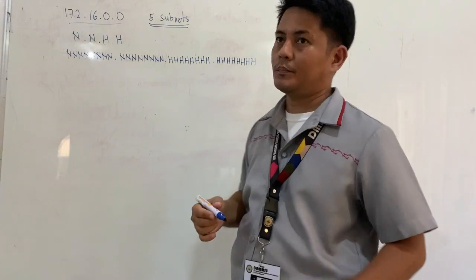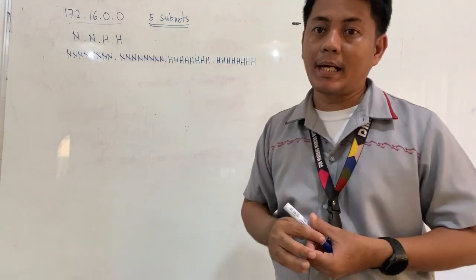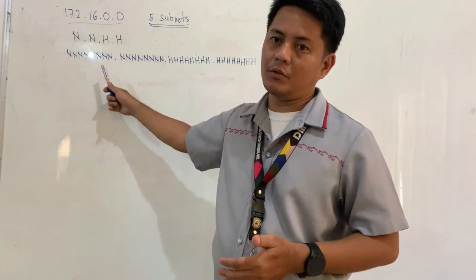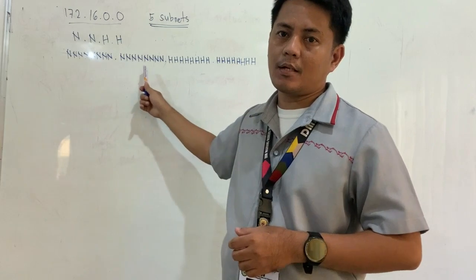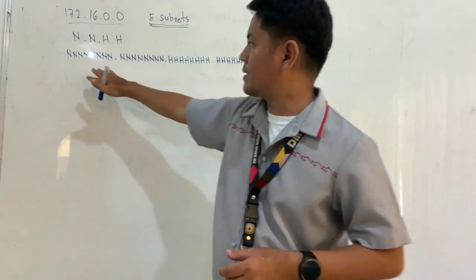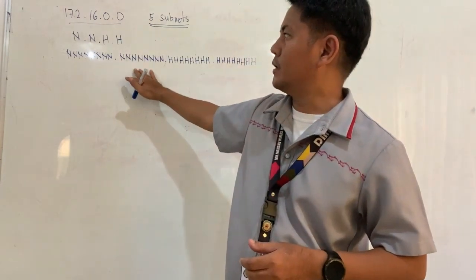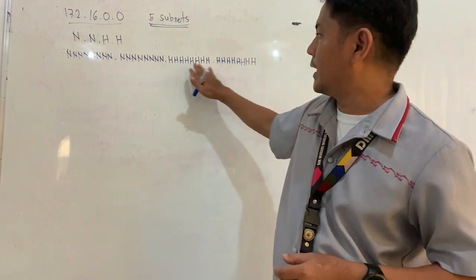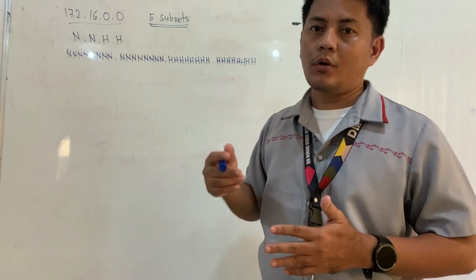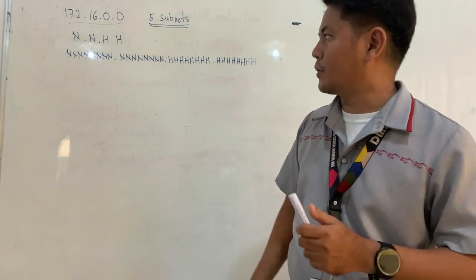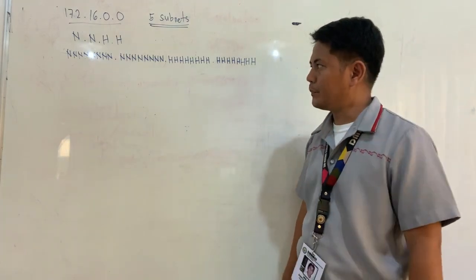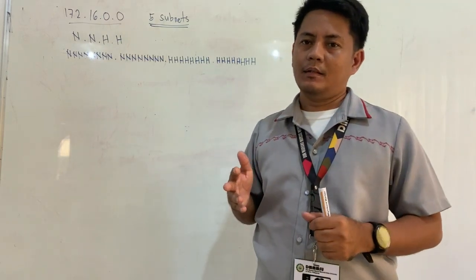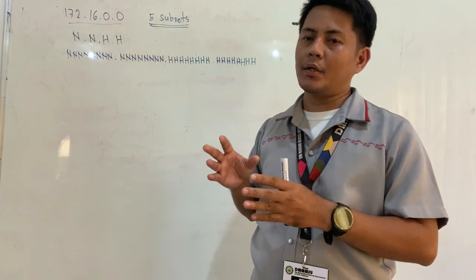Each octet is equivalent to eight binary bits, so the full IP address comprises 32 bits total. The first and second octets are for the network address, and the third and fourth octets are for host bits.